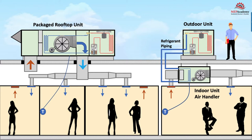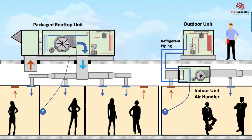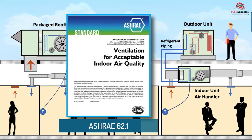Refrigerant carries more heat capacity than air, which allows small refrigerant piping to easily maneuver through building structures and components as opposed to large air ducts. This is what gives split systems their advantage, except when it comes to ASHRAE 62.1 ventilation air requirements, which we'll discuss later.